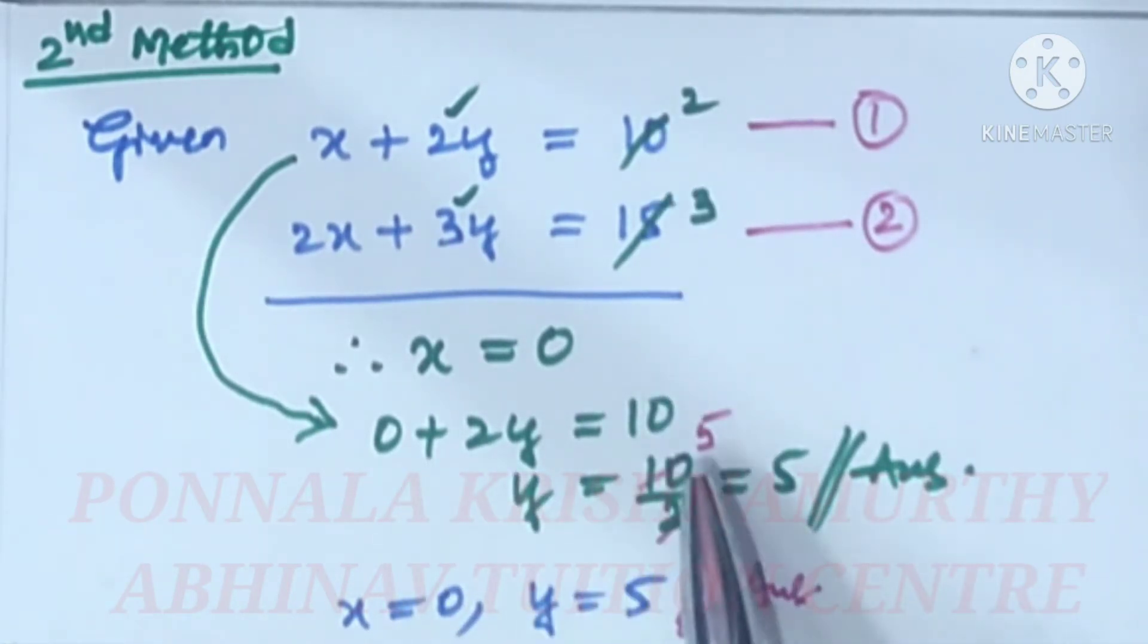y is equal to 10 by 2 is equal to, 5 and 2 cancel, 5 answer. x is equal to 0 and y is equal to 5. Answer.